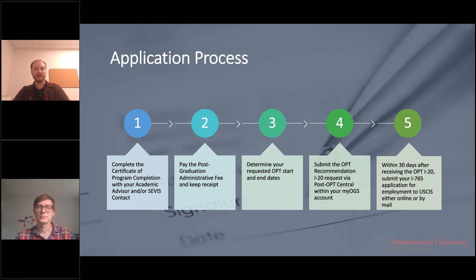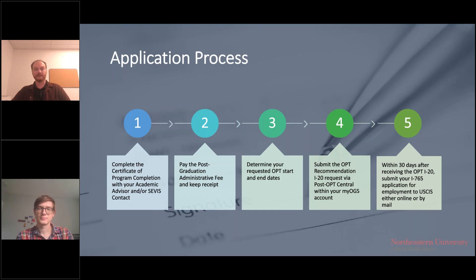The first part of the application process is communicating with your academic department and specifically your academic advisor to complete the Certificate of Program Completion. This document confirms your expected graduation date and that you have completed all requirements for graduation — signed by both you and your academic advisor. You then take this signed document and apply to our office for a recommendation I-20. The submission also requires proof that you have paid the post-graduation administrative fee, which maintains your student status records while you are on OPT.